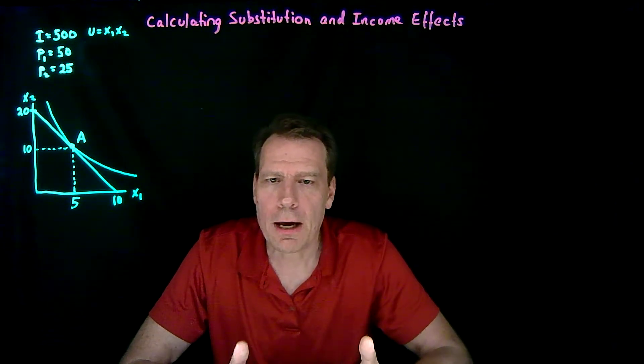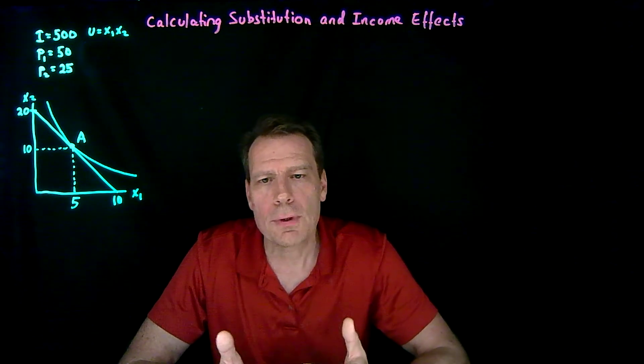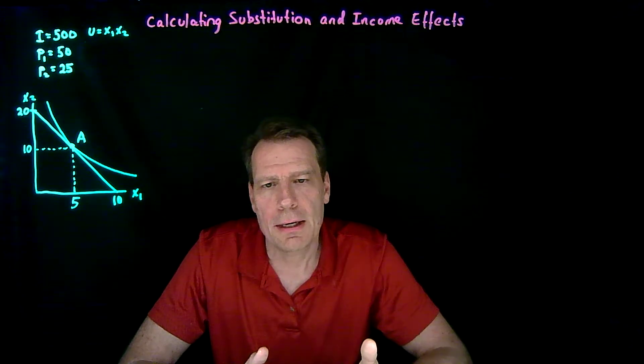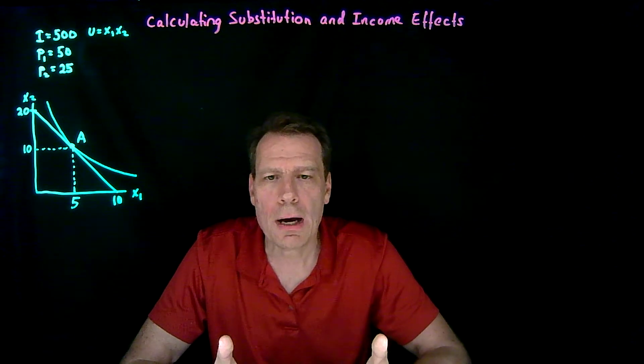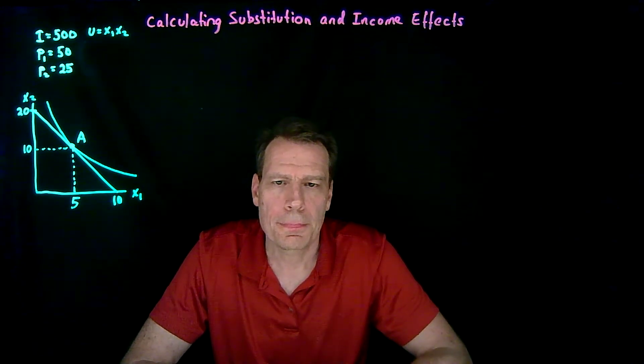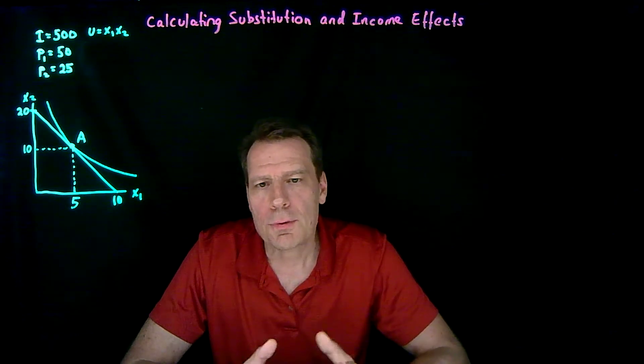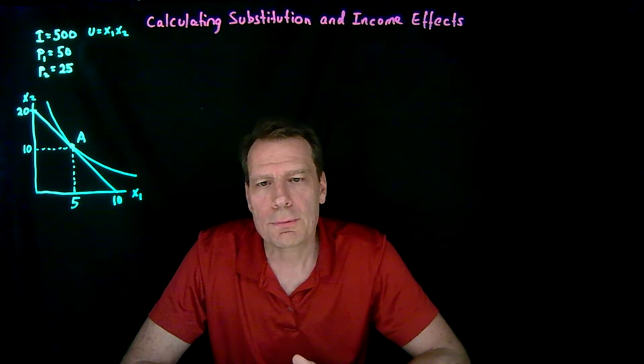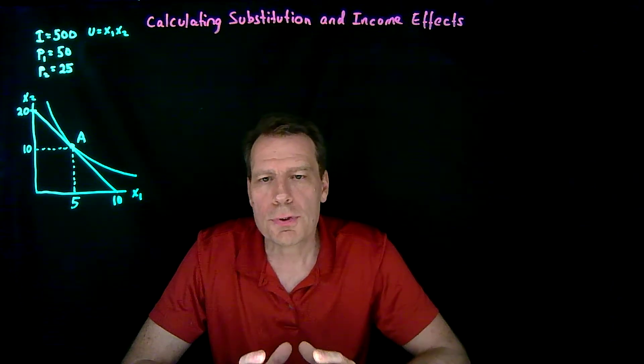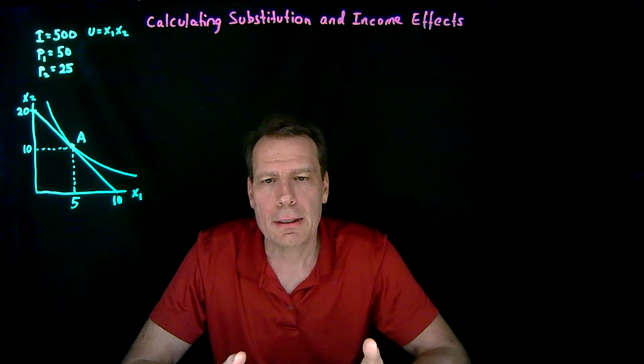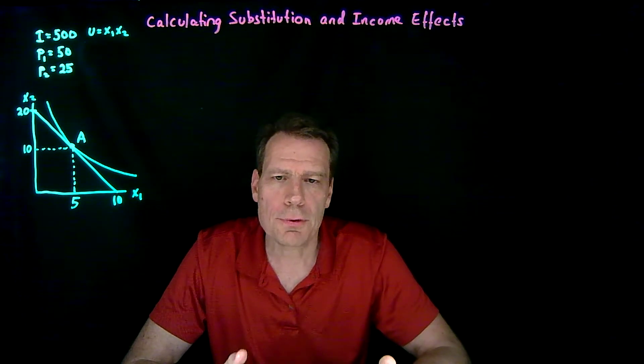We've now seen graphically how price changes give rise to income and substitution effects that together determine the new optimal consumption bundle. Next, we're going to ask, how can we actually calculate that?